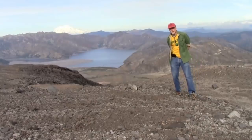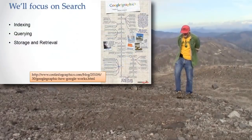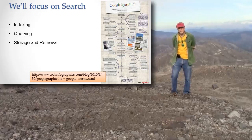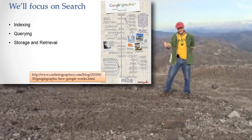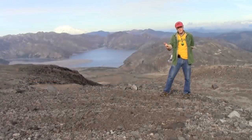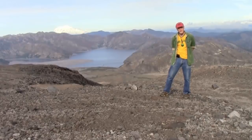We're talking about Google Search. The three parts of it that we're going to talk about are indexing, which we've talked about already; querying, which we're going to talk about now; and then storage and results, which we'll talk about next time.